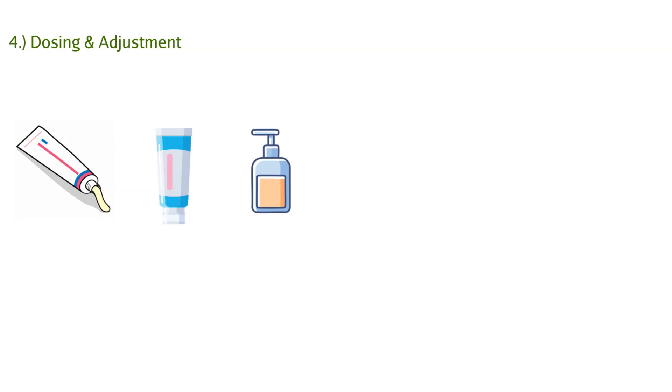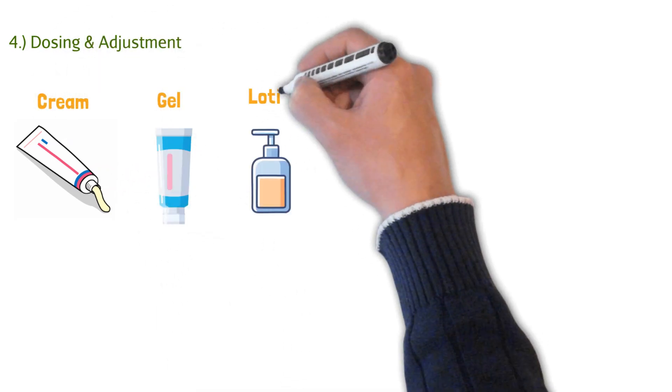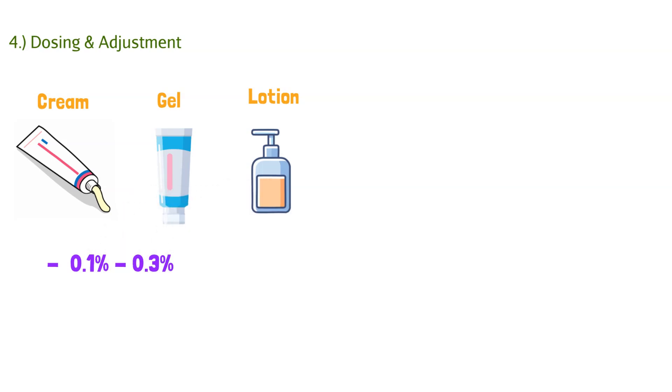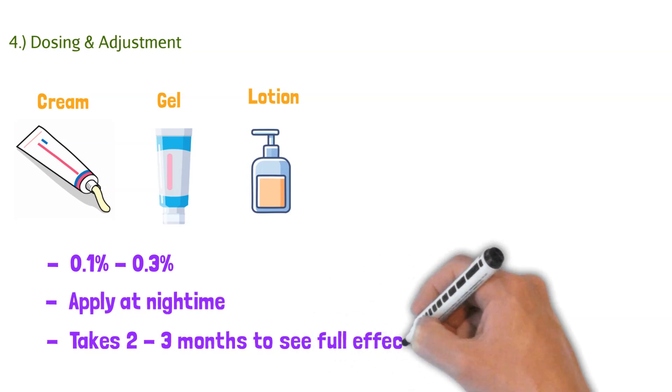Now that we know when to use Adapalene and how it works, let's talk about the dosing for it. Now remember, it comes in a cream, gel, or lotion, it's all topical. It does come in a 0.1% to a 0.3%, so you always want to start with the lower end and work your way up. Adapalene is always applied at nighttime, and there's a reason for that that we'll get into. And then you'll also have to tell patients it takes anywhere from two to three months to see the full effect. A lot of people with acne, they want a right-now cure. Unfortunately, it is a process. Nothing works overnight. It's going to take a while for those nuclear receptors to activate, the inflammatory process to diminish. So make sure you set your expectations right. Two to three months to see the full effect.